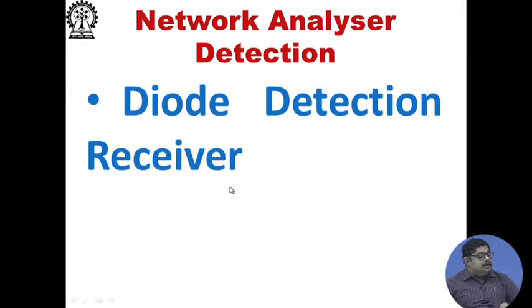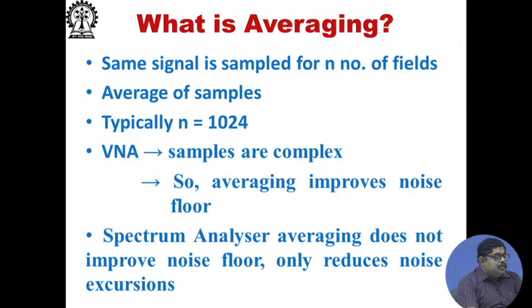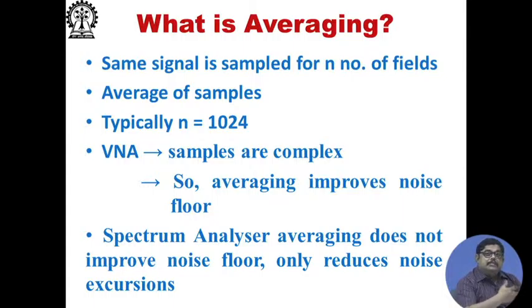Detection uses diode detectors or tuned receivers. Averaging involves sampling the same signal N times — typically N from 1 to 10,000 — and the averaged samples are complex. Averaging improves the noise floor because noise has a mean of zero, so the more measurements you average, the more your SNR improves.